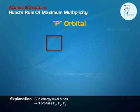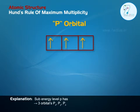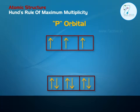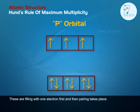Explanation: Sub-energy level P has three orbitals — Px, Py, and Pz. These are filled with one electron first, and then pairing takes place.